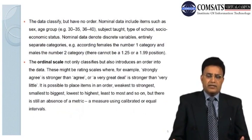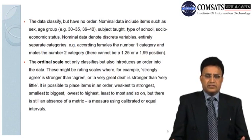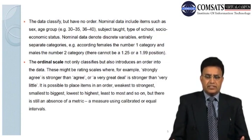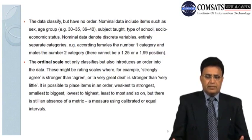The data classify but have no order. Nominal data include items such as sex, age group, subject taught, type of school, socioeconomic status, etc. Nominal data denote discrete variables, entirely separate categories. For example, according females the number one category and males the number two, there cannot be an intermediary such as 1.25 or 1.99 position.